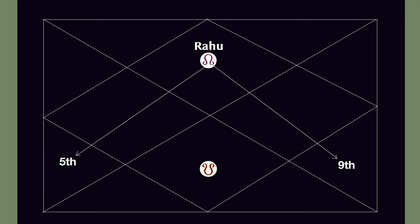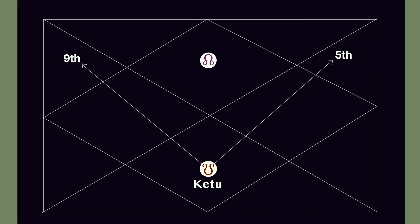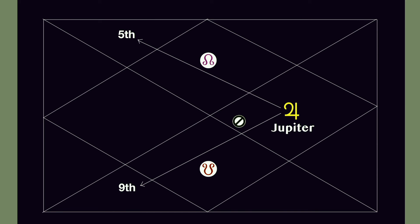Looking at the chart, Rahu has 5th and 9th aspects. This is a blank chart as an example. So Rahu, if it sits in the 1st house, its 5th aspect looks at the 5th house and 9th aspect looks at the 9th house. Similarly, Ketu sits diagonally opposite — its 5th aspect is the 11th house from the 7th, and its 9th aspect is the 3rd house. Jupiter, if sitting in the 10th house, has its 5th aspect on the 2nd house and 9th aspect on the 6th house. This is very important to consider.